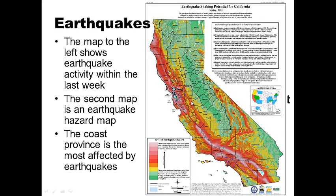The second map is an earthquake hazard map. The red areas illustrate the most shaking — the areas that receive the most earthquakes. The coastal province really receives a lot of earthquake activity. We're over here in the green area, so we're relatively safe.